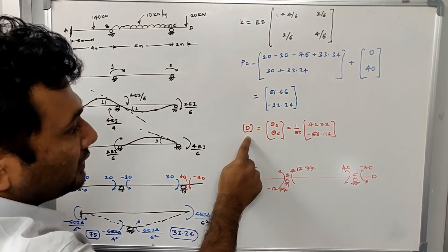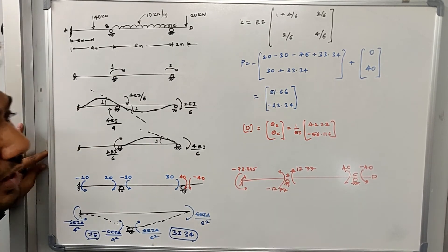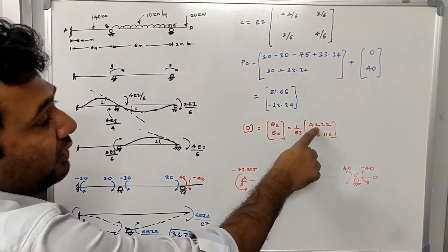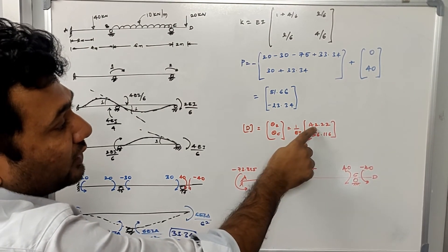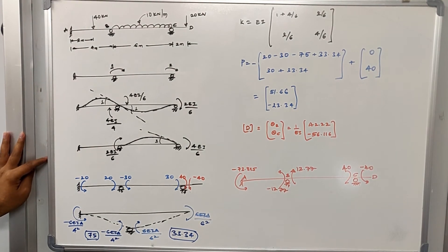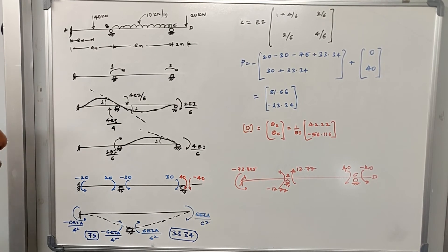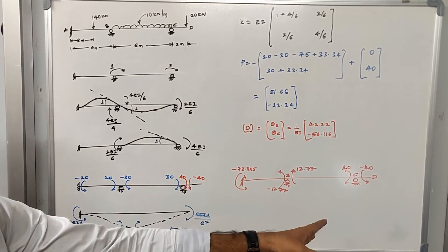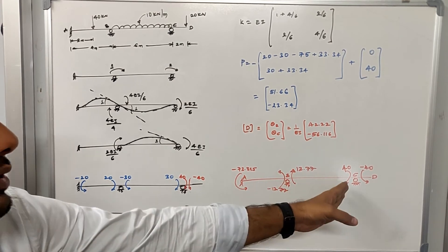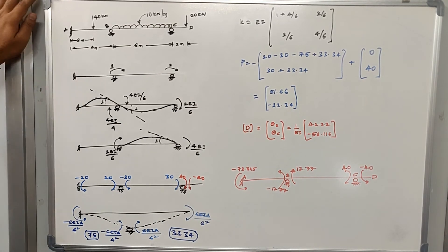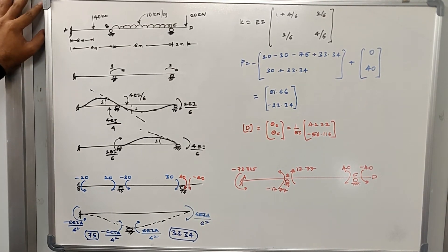The displacement matrix contains theta B and theta C, and is obtained by multiplying the inverse of the stiffness matrix by the force matrix. Solving in a calculator gives EI·θ_B = 42.22 and EI·θ_C = −56.116. With these unknown values, the next step is to calculate the end moments using slope deflection equations: M_AB, M_BA, M_BC, and M_CB. M_CB is already determined as 40 kN·m from the cantilever, and M_CD is also calculated. You can verify these results against the slope deflection solution.